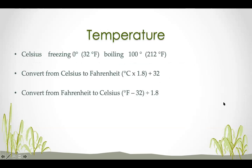Temperature conversion is important because the United States uses Fahrenheit while most of the world uses Celsius. In Celsius, the freezing point of water is 0°C (32°F), and boiling is 100°C (212°F). To convert Celsius to Fahrenheit: multiply by 1.8 and add 32. To convert Fahrenheit to Celsius: subtract 32 and divide by 1.8.